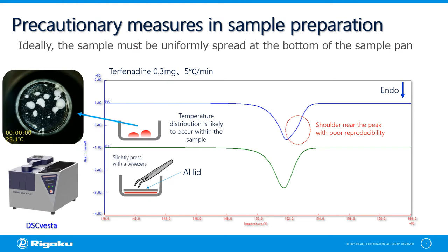Sample preparation is essential to accurately obtain the significant thermal behavior of a material. Especially when measuring with a small amount of sample, disperse the sample thinly on the bottom of the sample pan. If the samples are in different granular sizes, a temperature distribution will occur within the sample, which may result in a shoulder at a peak. In such case, after putting the sample in a sample pan, place an aluminum plate as a drop lead and lightly press it with tweezers to bring the sample into close contact with the bottom of the pan to distribute the temperature inside the sample. The shoulder may become smaller and disappear. If the sample has a shoulder in essence, it should be reproducible, so if a peak is not reproducible, try preparing a sample in this manner.